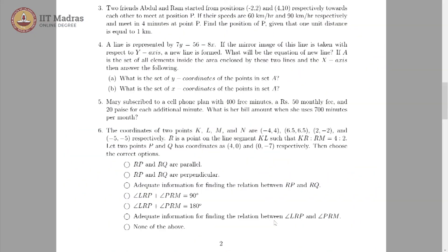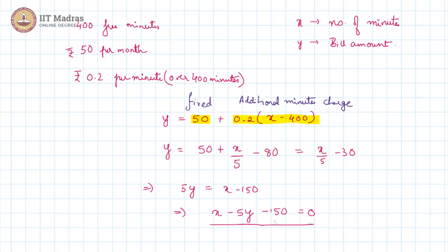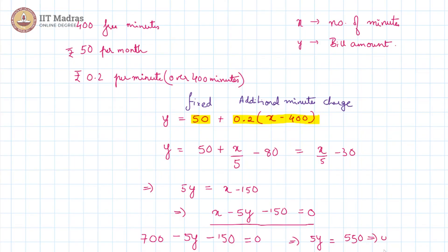Mary is using 700 minutes per month and we need the bill amount for that. If we substitute x = 700, we get 700/5 − 30 = 140 − 30, which gives us 5y = 550, implying y = 110 rupees. This is the bill amount for Mary.